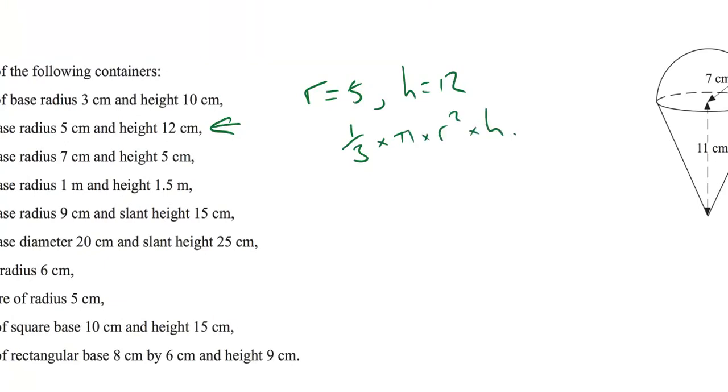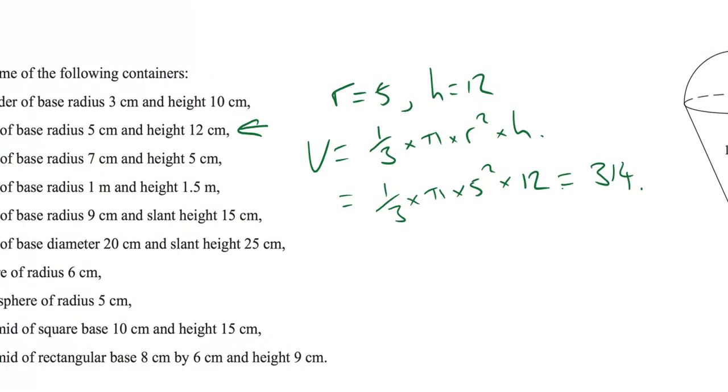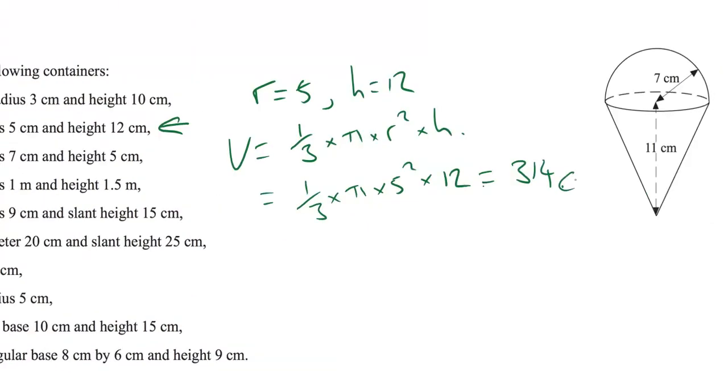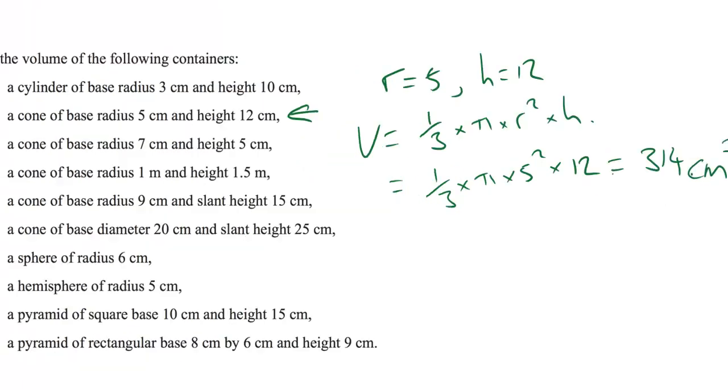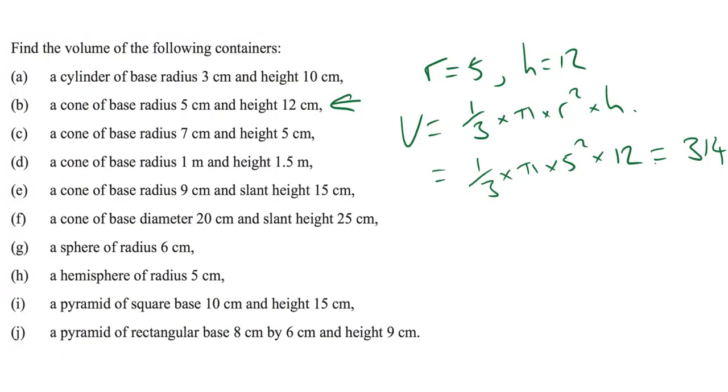So all we're going to do is substitute that in: a third times pi times five squared times 12 is all we have to do. So get your calculator out and plonk this into the formula and then see what happens. And we get 314. Now, the units were originally in centimeters, so this is centimeters cubed because it is a volume.